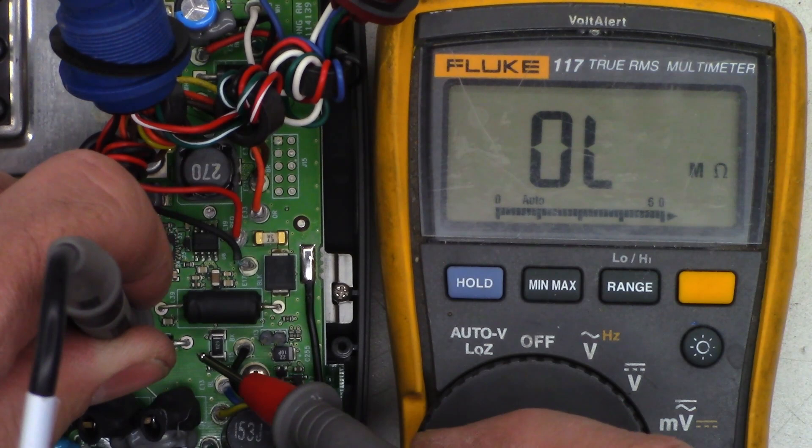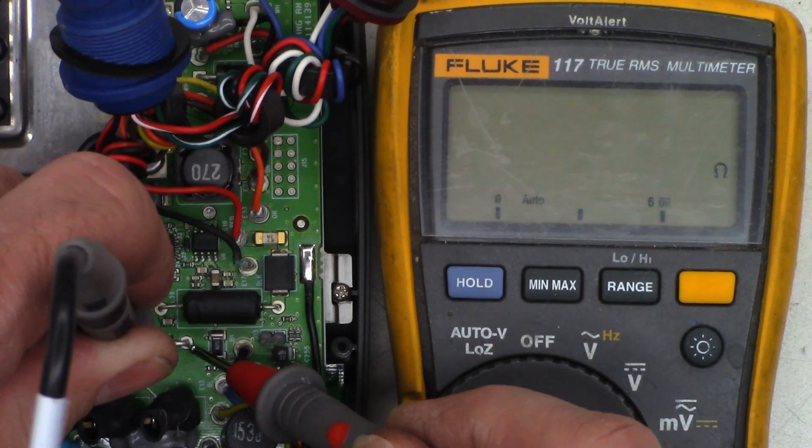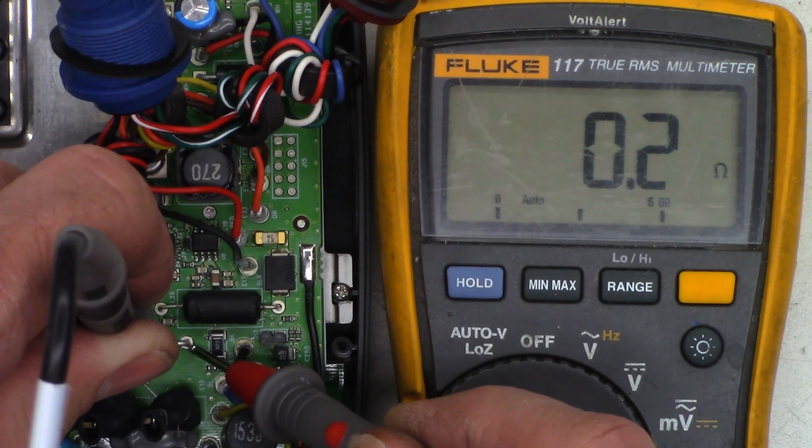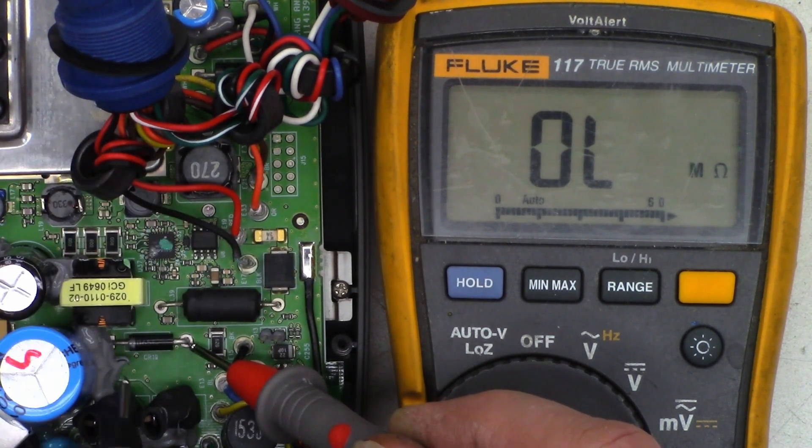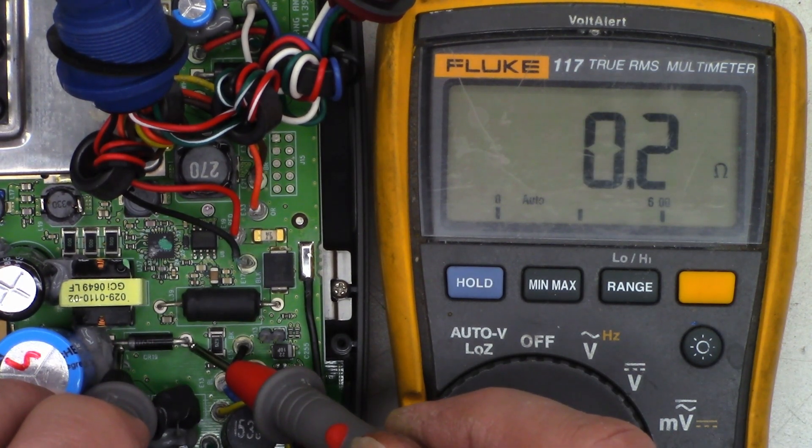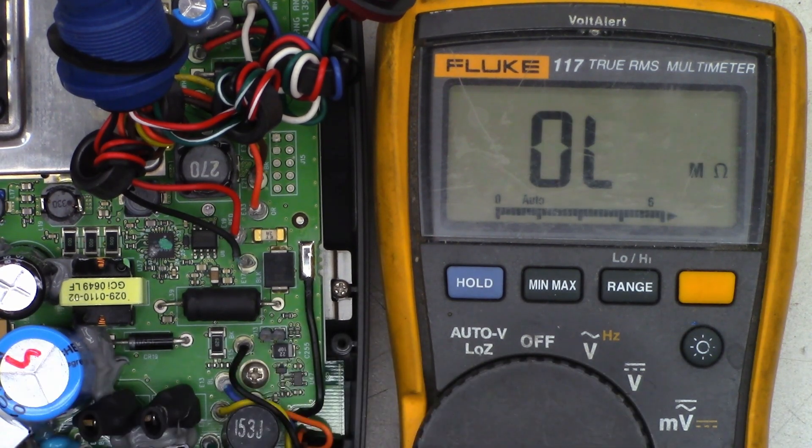And I'm seeing 0.3 ohms on it. So I think I'm going to go ahead and pull this thing open. I know it's kind of hard to see, but there is the protection diode, 0.2 ohms at this point. So I'm going to go ahead and pull this thing open and unsolder that diode and see if my short actually goes away.